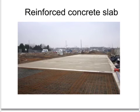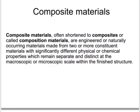Reinforced concrete is what is known as a composite material. A composite material is made when two or more materials are combined together. These materials have very different properties, but when they are combined together they make a material which is better than either of the individual materials.